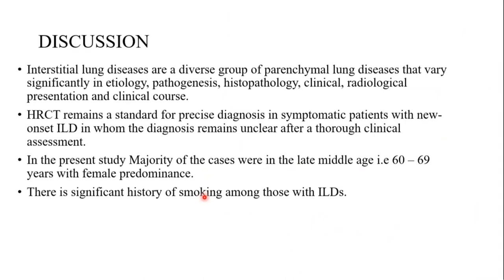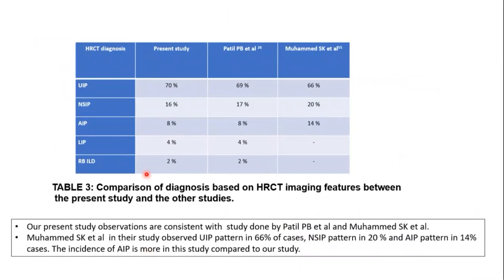Coming on to discussion: interstitial lung disease is a diverse group of parenchymal lung diseases, varying significantly in etiology, pathogenesis, and histopathology. HRCT remains the standard for precise diagnosis in symptomatic patients, particularly if the clinical diagnosis remains unclear. In the present study, patients were mostly in the 60 to 69 year age group with female predominance, and there was significant use of smoking. The formal diagnoses in our study were usual interstitial pneumonia, NSIP, acute interstitial pneumonia, lymphoid interstitial pneumonia, and respiratory bronchiolitis-ILD.